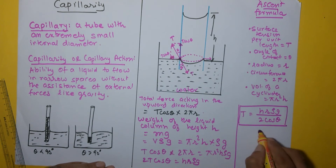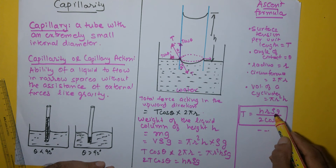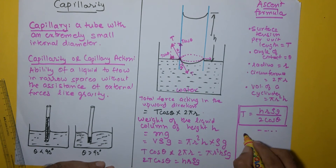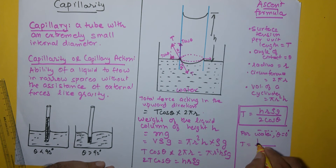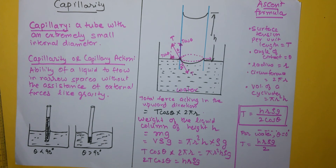Rearranging, we get T = hrρg / (2cosθ). This equation is known as the ascent formula. It gives the surface tension of the liquid if we know h, the radius of the tube r, the density of the liquid, and the angle of contact. For water specifically, theta equals 0, so cosθ equals 1, and the formula simplifies to T = hrρg / 2. In a short video immediately following this, we will look at various cases involving the position of the tube.